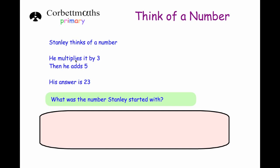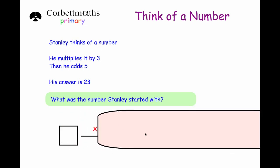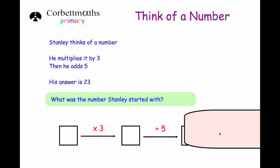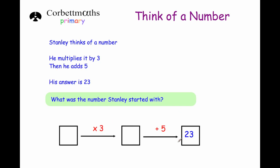Now we have a two-step question. Stanley thinks of a number, he multiplies it by three, he then adds five and his answer is twenty-three — what number did Stanley start with? Working backwards doing the inverse each time: first subtract five, and twenty-three take away five is eighteen. Then do the opposite of times by three, so divide by three: eighteen divided by three is six. Stanley started with six. Let's test it: six times three is eighteen, plus five is twenty-three.